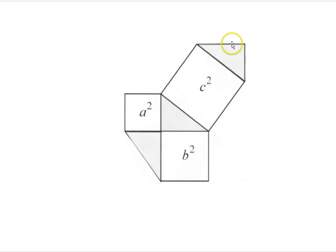But if you could prove that this area equals this area, you've essentially proved that a² + b² equals c².